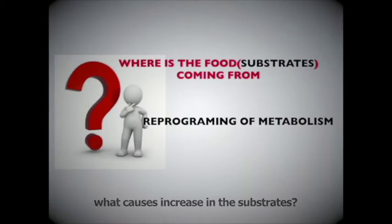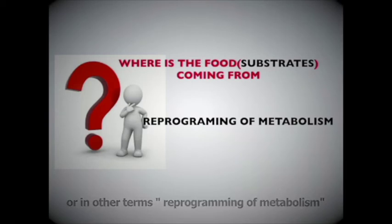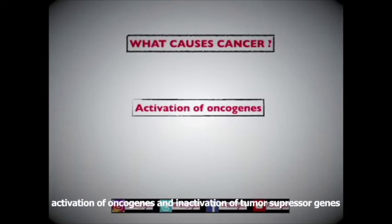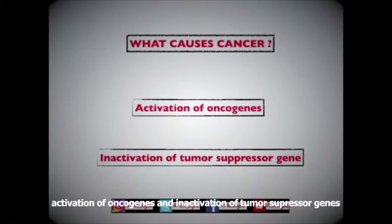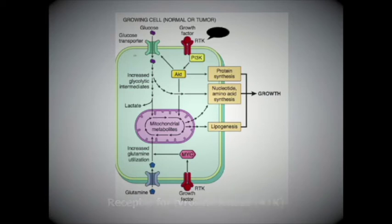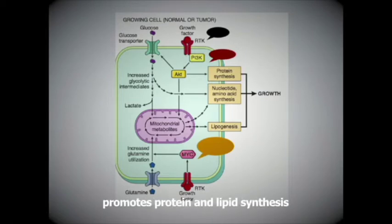The other important question is: what causes increase in the substrates, or in other terms, reprogramming of metabolism? The answer lies in what causes cancer — activation of oncogenes and inactivation of the tumor suppressor gene. This image from Robbins shows three important oncogenes: receptor tyrosine kinase, the PI3K-AKT pathway, and MYC, which promotes glycolysis, protein and lipid synthesis, and increased utilization of glutamine.